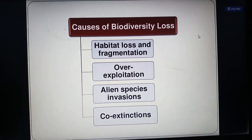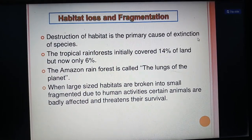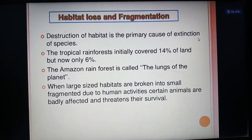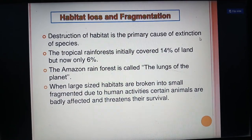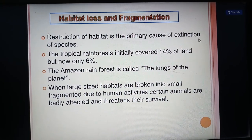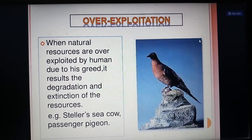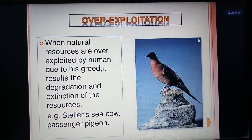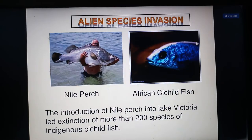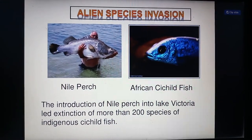Causes of biodiversity loss include: habitat loss and fragmentation, overexploitation, alien species invasions, and co-extinctions. Destruction of habitat is the primary cause of species extinction. Tropical rainforests initially covered 14% of the land but now cover only 6%. The Amazon rainforest is called the lungs of the planet. When large habitats are broken into smaller fragments by human activities, certain animals are badly affected. In overexploitation, when natural resources are over-exploited due to human greed, it results in degradation and extinction — for example, Steller's sea cows and passenger pigeons. The introduction of Nile perch into Lake Victoria led to the extinction of more than 200 species of indigenous cichlid fish.